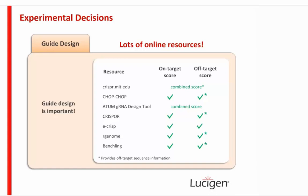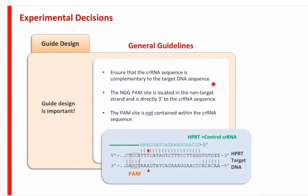General guidelines for guide design: ensure the CRISPR RNA sequence is complementary to the target DNA sequence. The NGG PAM site for Cas9 is located on the non-target strand, directly 3' to the CRISPR sequence, but it is not contained within the CRISPR RNA sequence itself — that is a very important point. The seed region closest to the PAM is where mismatches are least tolerated.